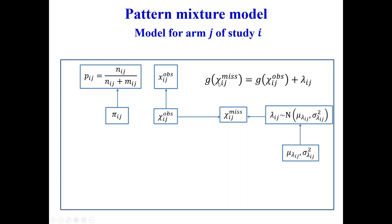I introduce the parameter lambda, and I conventionally assume a normal distribution for lambda, with two parameters to estimate: its mean value and variance. If lambda equals zero — that is, if it's a constant equal to zero — then I believe the mean value in the missing participants is exactly the same as in the observed participants. The total outcome I want to estimate is a weighted average of the outcome in the observed and missing participants.